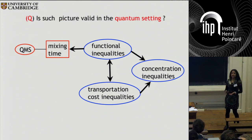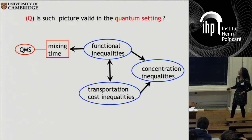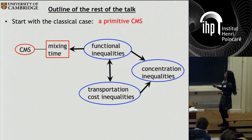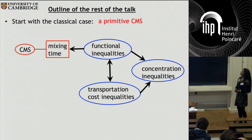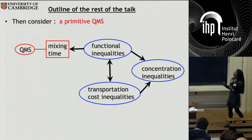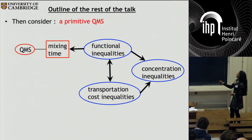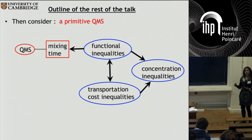The question that we pose is: is such a picture valid in the quantum setting, when one considers a primitive quantum Markov semigroup? The outline of the talk will be as follows. I will start with the classical case, going through these different objects, explaining what they are and giving examples of implications. Then I will move to quantum Markov semigroups, say what sort we are considering and what our constraints are, and then discuss the relevant non-commutative generalizations of these classical concepts.